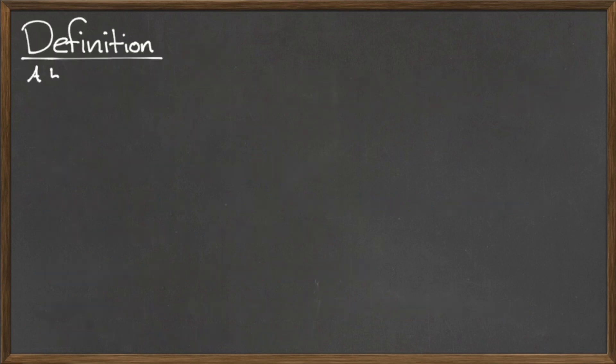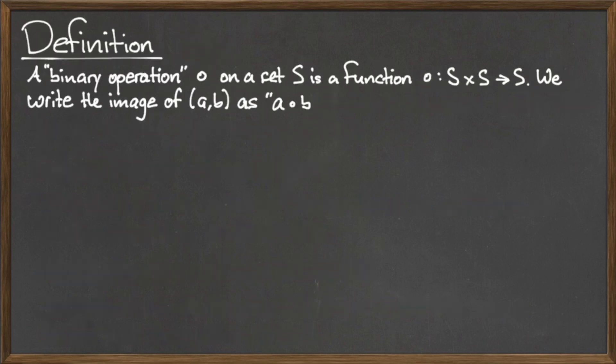To formally define a binary operation, we say that a binary operation · on a set Z is a function · from Z × Z to Z. We write the image of the ordered pair (a, b) as a · b.